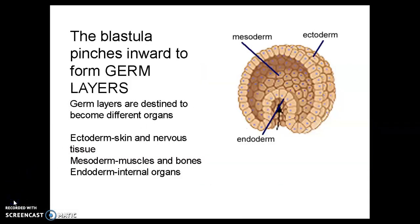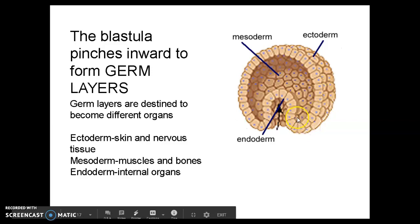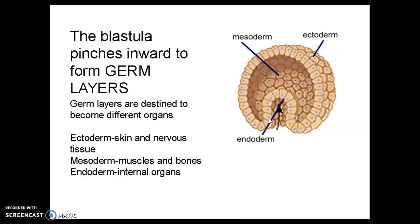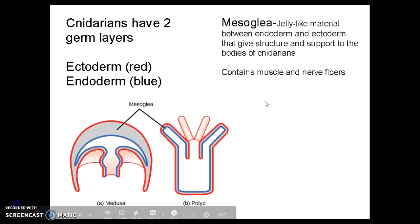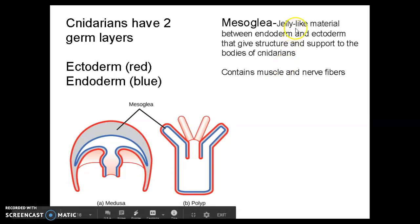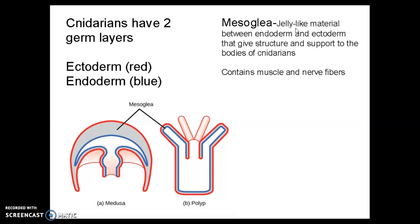This slide is a quick review of how embryos develop in animals. You have a hollow ball of cells called the blastula that will start to pinch inward to form different layers of cells called germ layers. These germ layers become different organs — ectoderm, mesoderm, and endoderm. Cnidarians only have two germ layers: ectoderm (shown in red) and endoderm (in blue). They don't have mesoderm; instead they have something called mesoglia, a jelly-like material between the endoderm and ectoderm that gives structure and support to the cnidarian body and also contains muscle and nerve fibers to help them move.